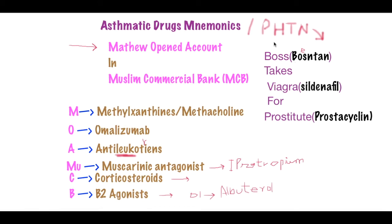Now for pulmonary hypertension drugs, the mnemonic I use is: 'Boss takes Viagra for a prostitute.' It's a little edgy, but it's the easiest way to remember. 'Boss' stands for Bosentan — the mechanism is that like a boss, you can go anywhere with no resistance, so this drug decreases resistance.